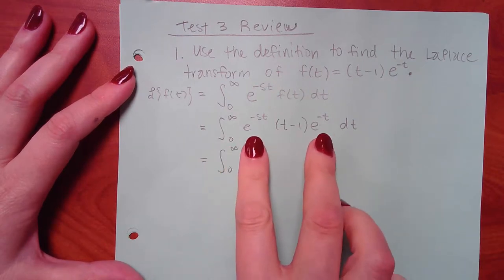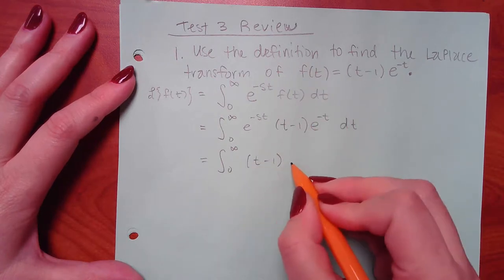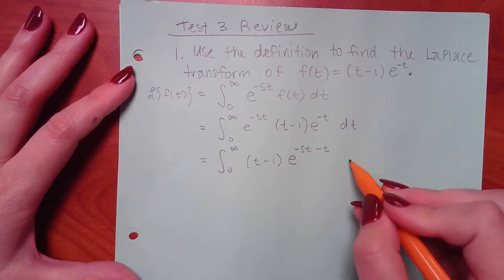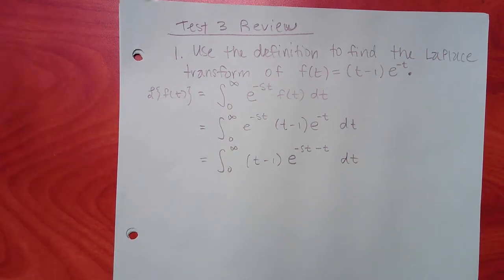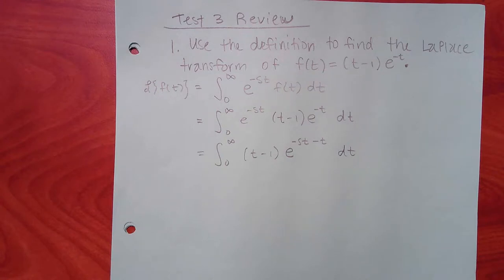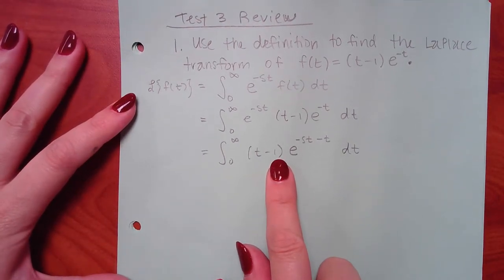When you multiply terms with the same base, you add the exponents. So this will be e to the negative st plus negative t, which is just minus t. Anytime you have variables — even t squared or t cubed — in front of your e, you can use the tabular method for integration by parts. It'll always work.